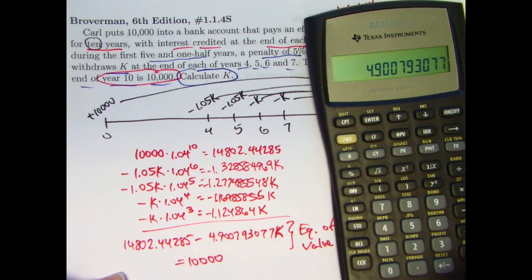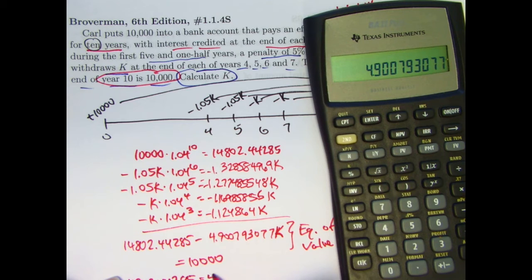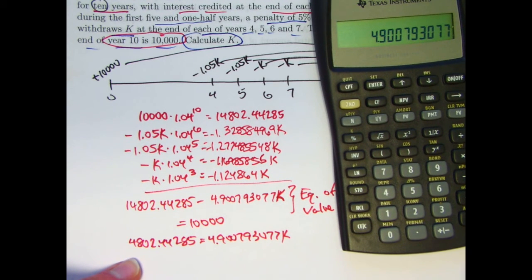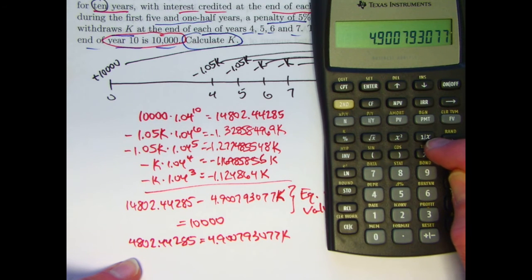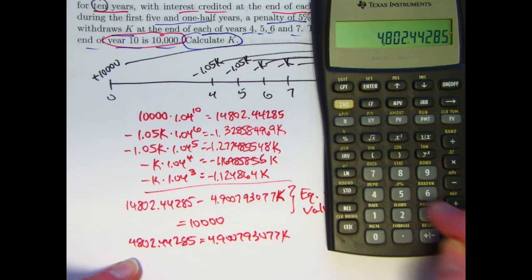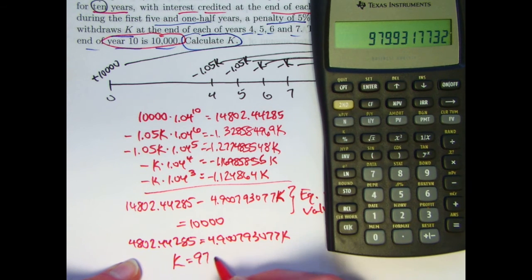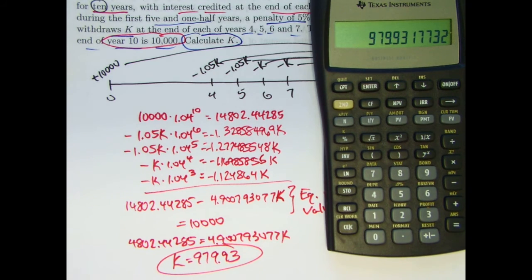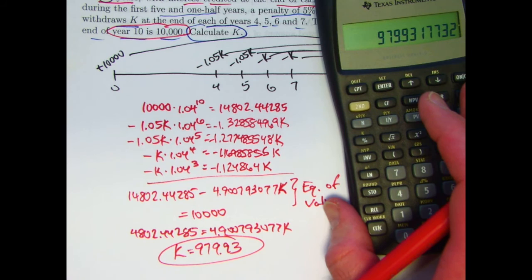Now I would need to bring the 4.900793077K to the other side, say, by adding it to both sides, and then also subtract 10,000. And I would get 4,802.44285 equals 4.900793077K. And then I divide both sides. Sorry about that there. Divide both sides by the 4.9. I can just take the reciprocal of it on the calculator here or store it. I'll just press the reciprocal button there, 1 over X. Take 1 over that and multiply it times 4802.44285. It looks like K is 979.93. And that is the answer. I double checked it and an answer key that I have. That is the value of K.